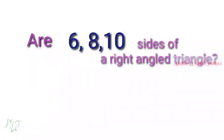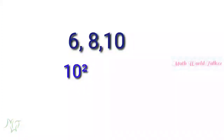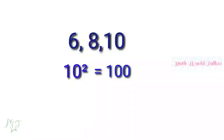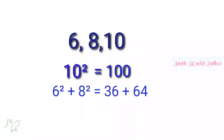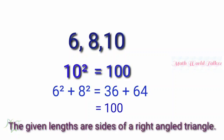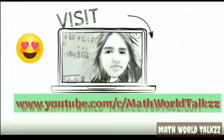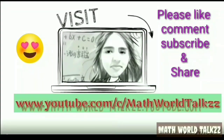Here, three sides are given and we want to find whether they are the sides of a right angle triangle. We take the largest number, which is 10. 10² = 100. Now we check the sum of the squares of the other two sides: 6² + 8² = 36 + 64 = 100. This equals the square of the largest side, so the given three sides are indeed the sides of a right angle triangle. Hope you found the class useful — if you liked it, please share with others. Thank you.